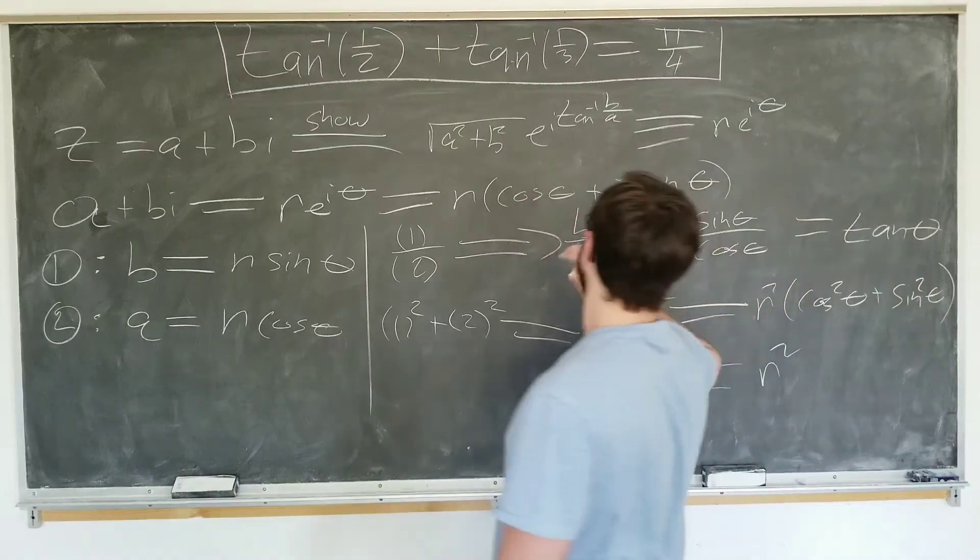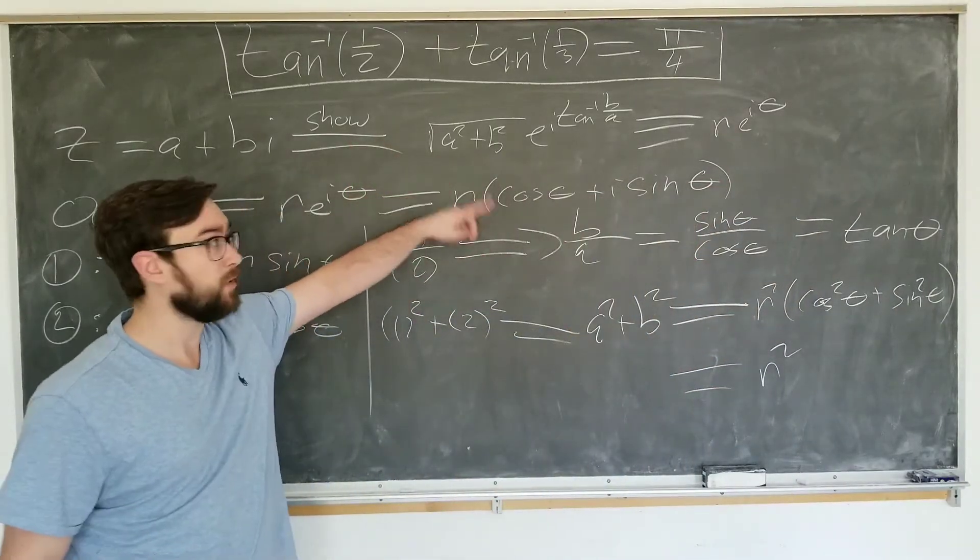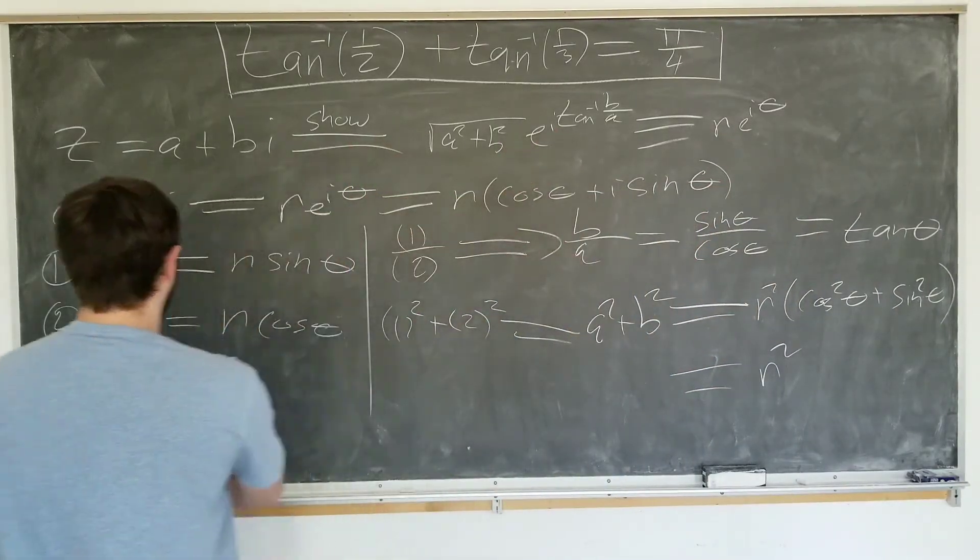Like we would have written here, r is the square root of a squared plus b squared. Theta is inverse tangent of b over a. Great.